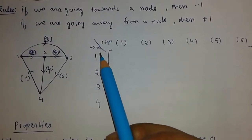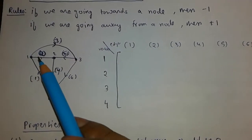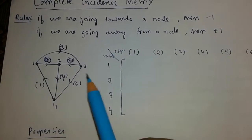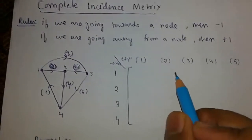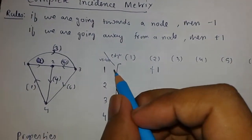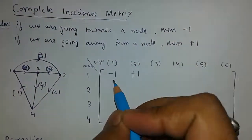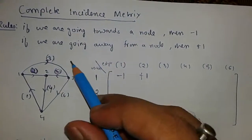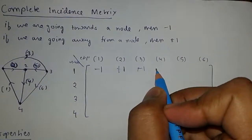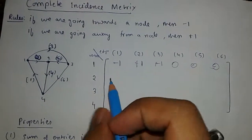These are all the vertices and these are all the edges. For vertex one: edge two is going away from node one, so we take plus one. Edge one is going towards node one, so we take minus one. Edge three is going away from node one, so we take plus one. All other edges are not in contact with node one, so we take zero.